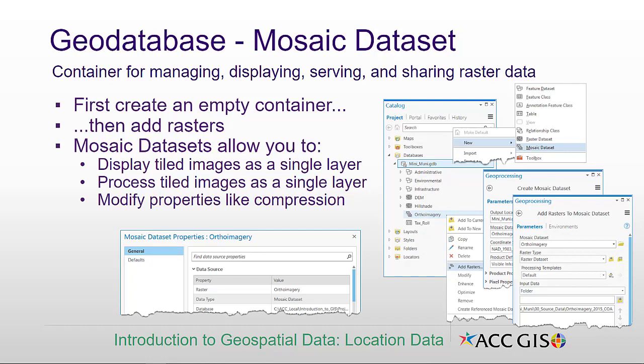We can also run raster geoprocesses on tiled images as a single layer. Instead of having to run slope on a whole bunch of different DEMs individually, I can create a mosaic data set, load the 100 DEMs into that mosaic data set, and run one slope process on the entire data set. It also allows you to tweak properties like compression.